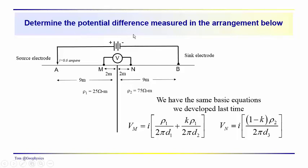We left you with a little problem last time. We introduced a vertical interface separating two mediums: a medium with resistivity of 25 ohm meters and one with resistivity of 75 ohm meters. We're measuring the potential difference at a point centered on the boundary between the two mediums. We have a current of 0.6 amperes, and this setup is a Schlumberger array with an L of 9 and a B of 2 meters.